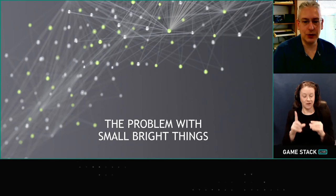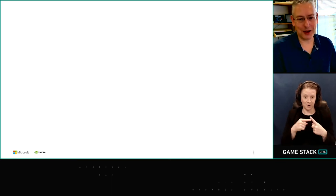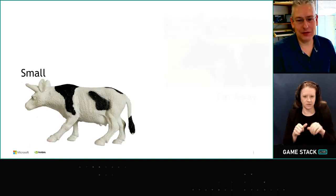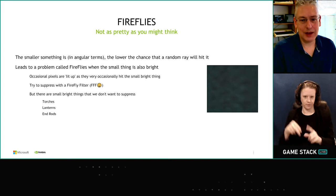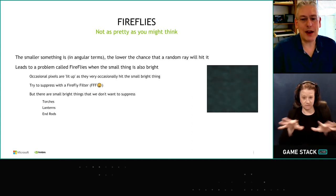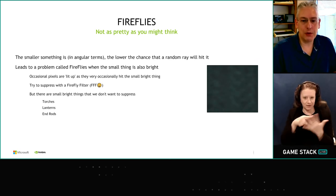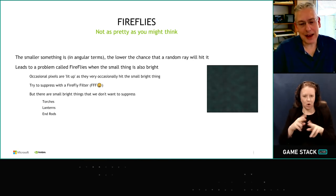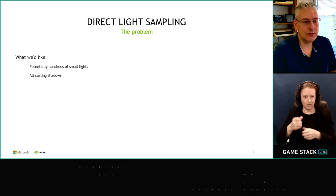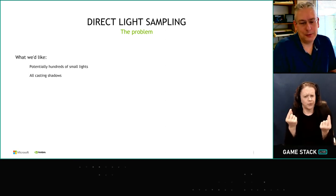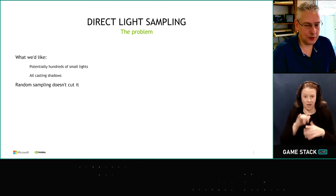There is one more topic I want to introduce: the problem with small, bright things. When I say small, I mean small in the angular sense — a nearby cow and a far-away cow can subtend the same angle from the viewer. Random sampling for diffuse irradiance can become problematic when you have small, bright things in the scene. The low chance of rays hitting these things, coupled with their high brightness, leads to a problem called fireflies. But we want to have things in Minecraft that happen to be very small and very bright, like torches — lots of small torches all able to cast shadows.